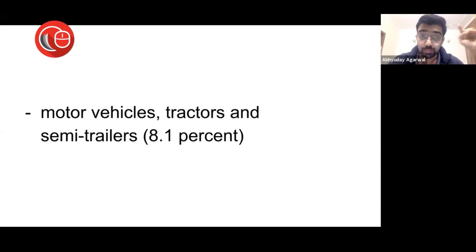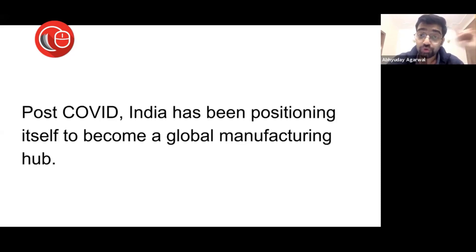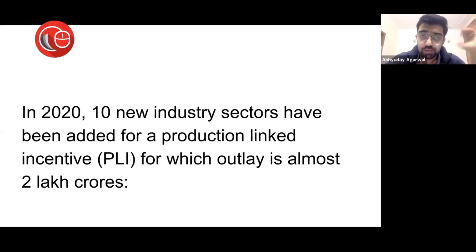Post-COVID, India is positioning itself to become a global manufacturing hub with Atmanirbhar Bharat and these initiatives. In 2020, 10 new industry sectors were earmarked for a production-linked incentive by the government with an outlay of almost two lakh crores. India is moving to manufacturing of a specific kind.